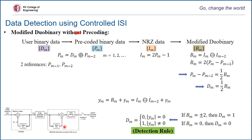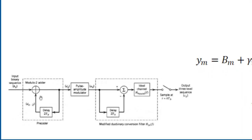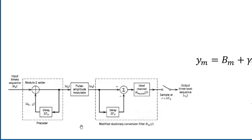The block diagram of transmission and receiver for modified duobinary with precoding is similar to simple duobinary with precoding. The only difference is that the precoder has a delay of two bits (twice the bit delay) which is added with modulo-2 addition. Using NRZ it is modulated, and in the receiver we utilize the same detection logic. That is how we generate modified duobinary using a precoder.